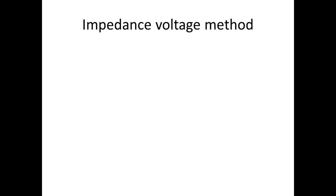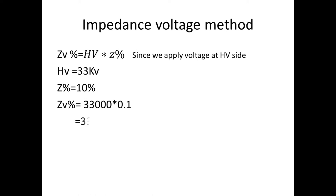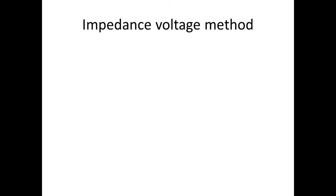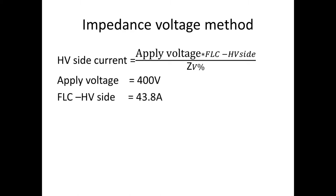Next, we apply the Impedance Voltage method. The formula is: Impedance Voltage = HV Voltage × Impedance Percentage. With HV voltage of 33 KV and impedance percentage of 10%, the impedance voltage is 3300 V. The HV side current formula is: (Apply Voltage × Full Load Current of HV side) / Impedance Voltage. Apply voltage is 400 V, full load current is 43.8 A, impedance voltage is 3300 V — giving 5.309 A.